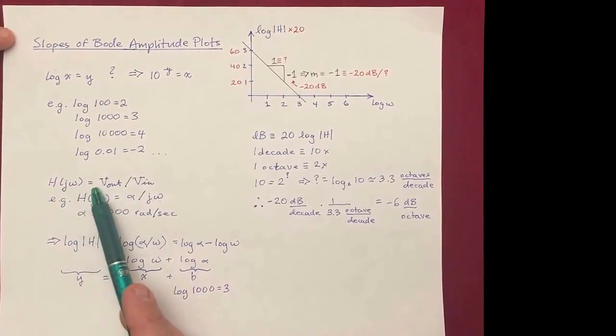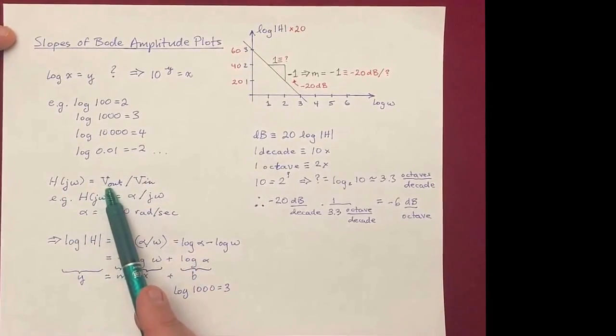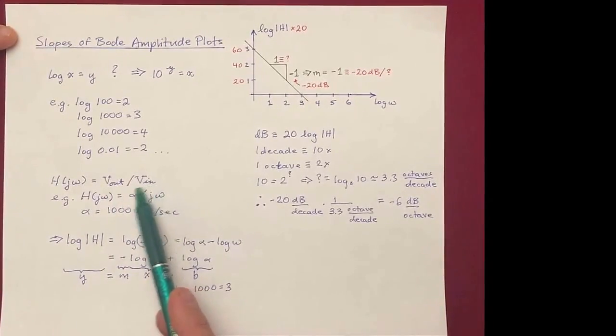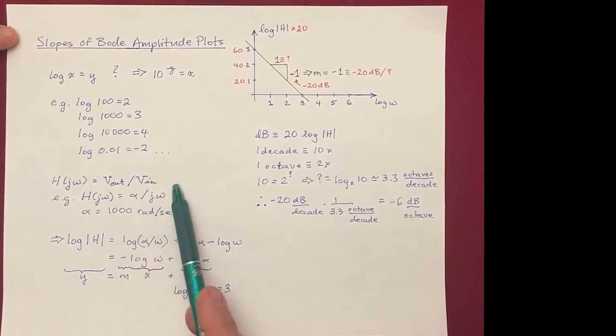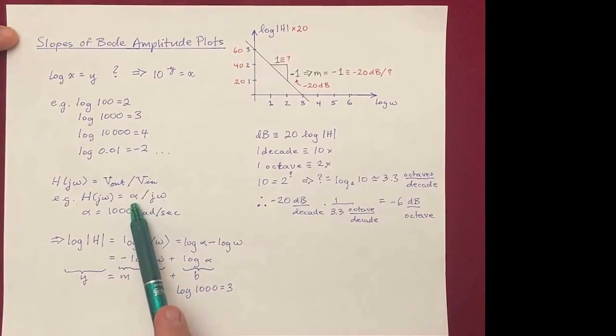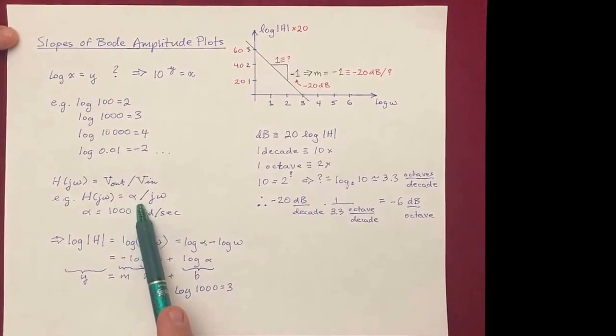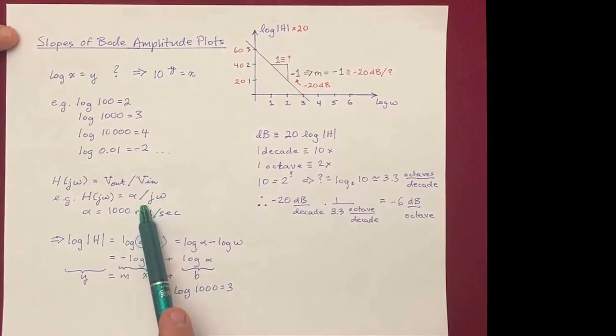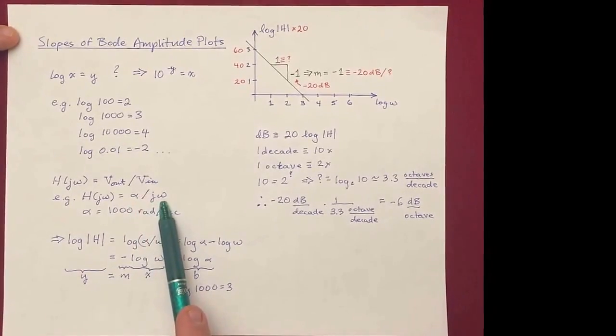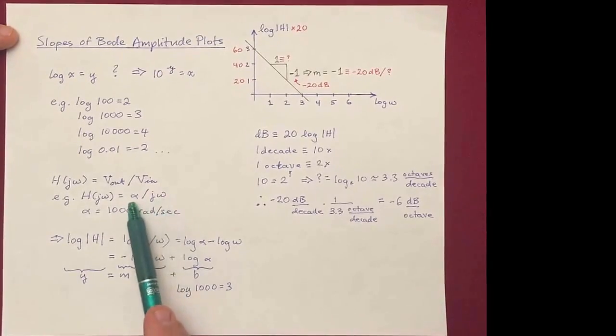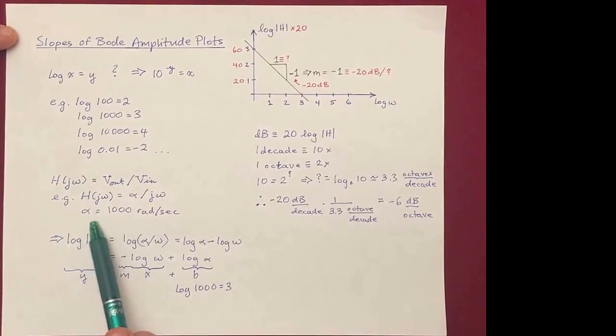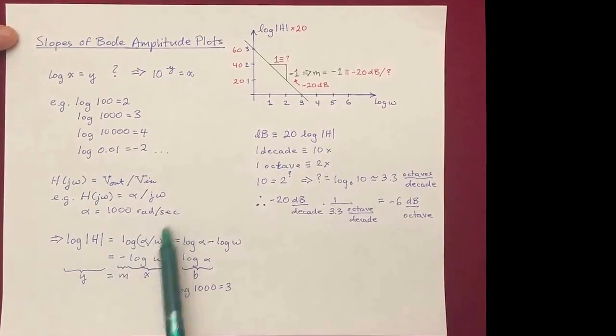The transfer function, you'll remember, is the ratio of the output phasor of a circuit to the input phasor. And in general, it can be pretty complicated. We're going to choose a simple one here, just so that we can use it as an example. It's not a real transfer function, it's just one I made up. So here we're going to say alpha over j omega, where omega is the frequency in radians per second, so alpha has to have radians per second too, because h is unitless. So I'll choose a value of 1,000 radians per second.